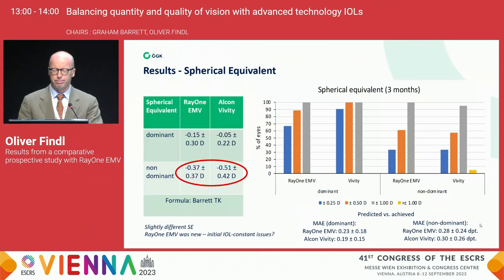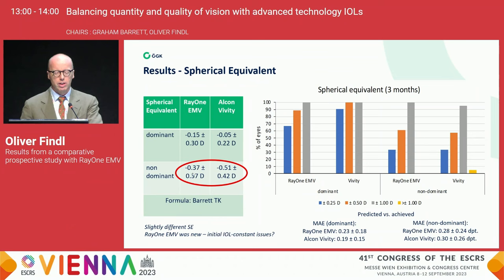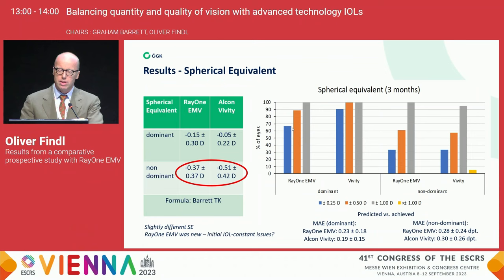Looking at spherical equivalent — both for the dominant eye and the non-dominant eye, the Ray-1 EMV and the Vivity — unfortunately, due to initial IOL constants since the lens was really new and not yet on the market, we achieved a little less minus in the Ray-1 EMV compared to the Alcon Vivity, which was already on the market for a while. That was adapted afterwards, so you'll see a slightly more deviation than originally planned for.